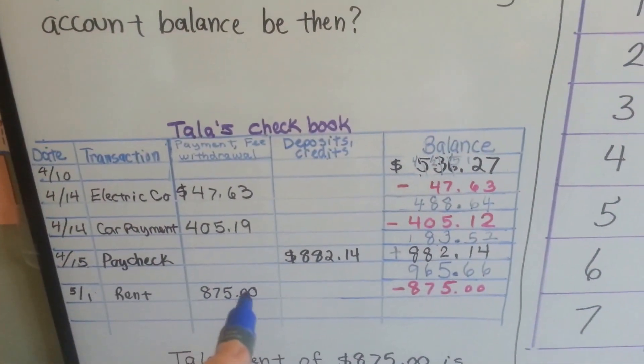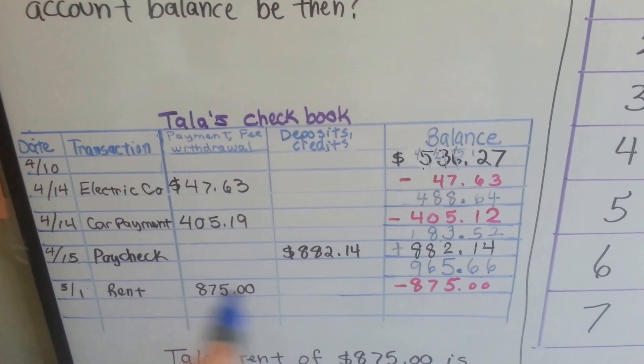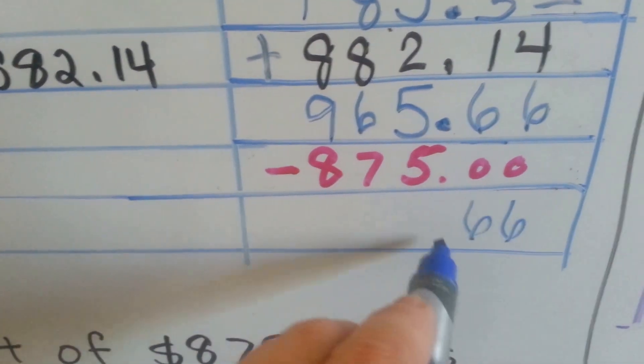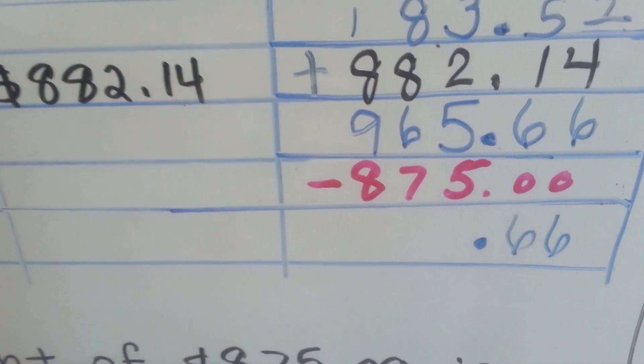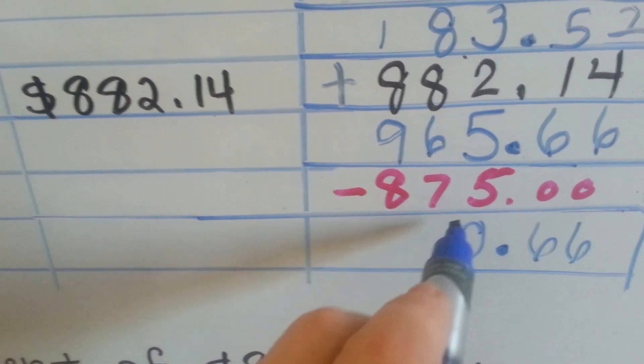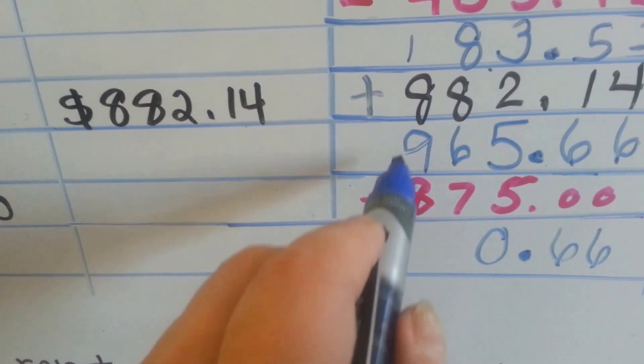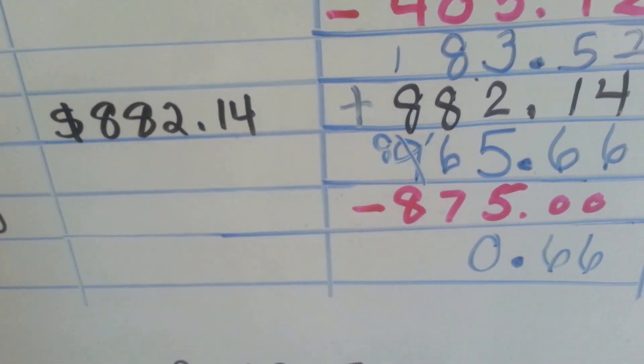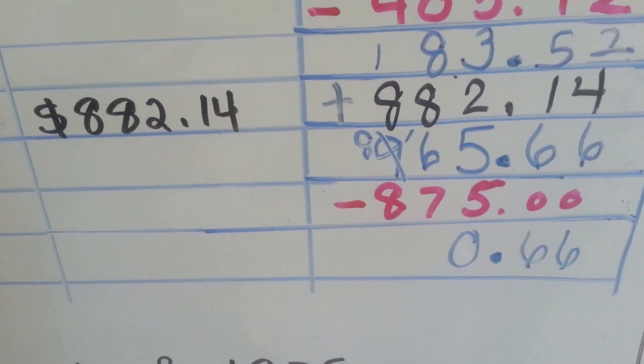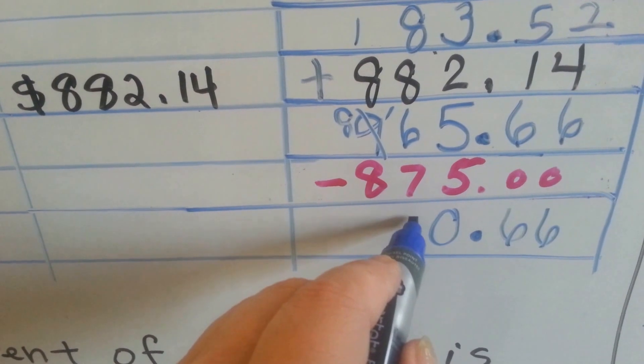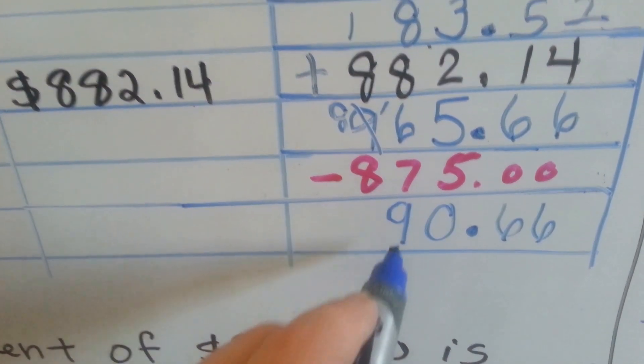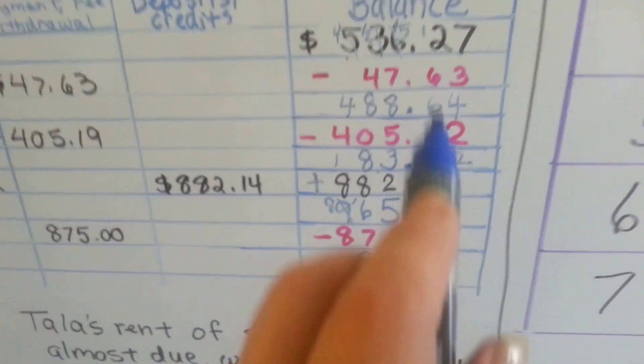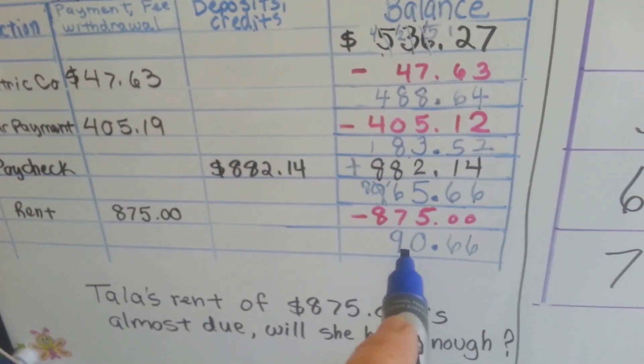So now we need to do the rent. Because the rent is a payment. These are 0's. So the 66 is just going to drop down. We keep our decimal points nice and straight. 5 take away 5 is 0. 6 take away 7, we can't. So we need to borrow it from the 9. It becomes an 8 and that becomes a 16. 16 take away 7 is 9. And now the 8's cancel each other out. So after paying all her bills, she now has $90.66.